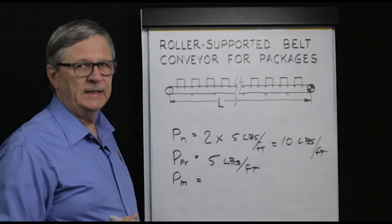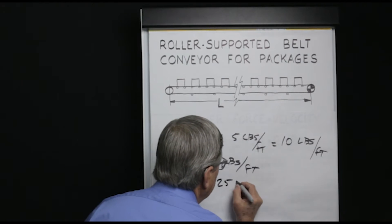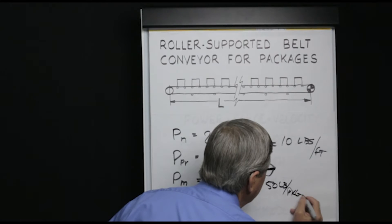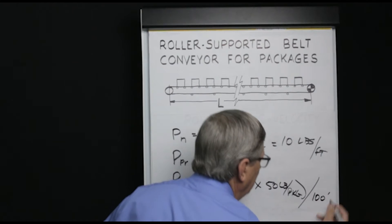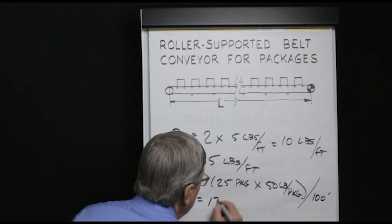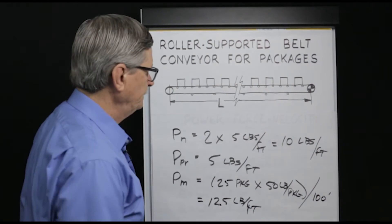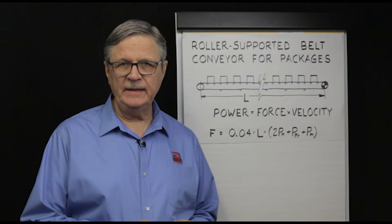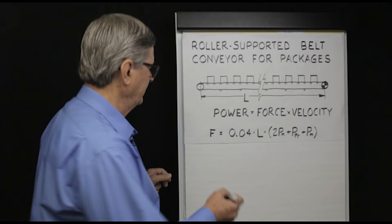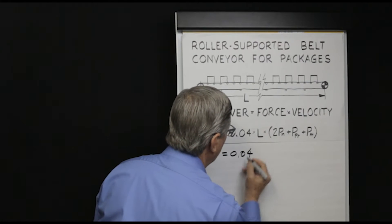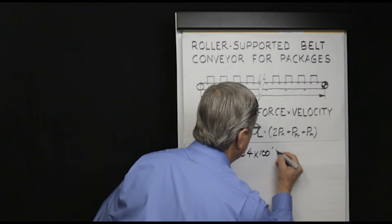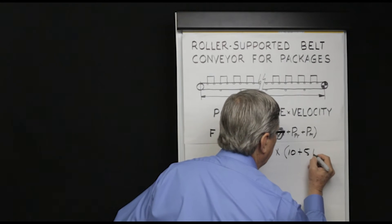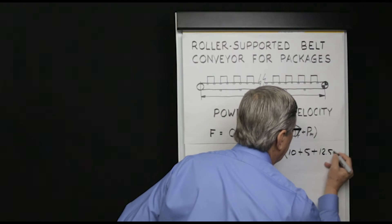PM is the weight per foot of the product to be handled. At any point in time we have 25 packages on the conveyor, with an average weight of 50 pounds per package, on a 100-foot-long conveyor. Therefore PM equals 12.5 pounds per foot. Summing those three numbers — 10 pounds per foot of belt, 5 pounds per foot of rolling stock, and 12.5 pounds per foot of product — we can calculate required belt pull.